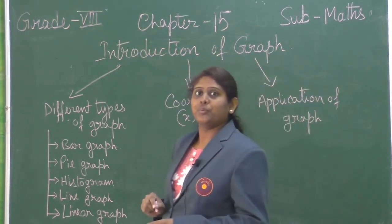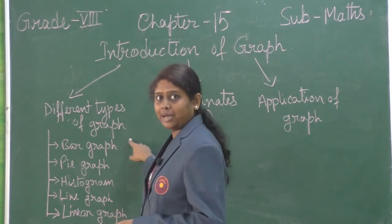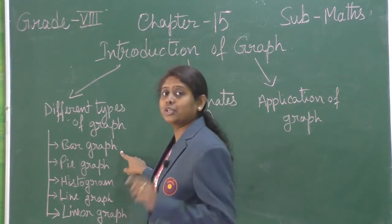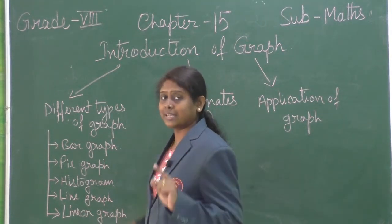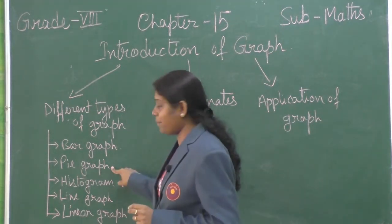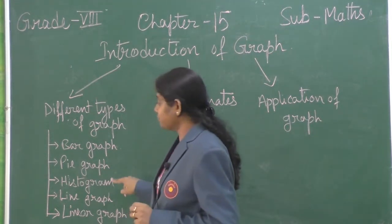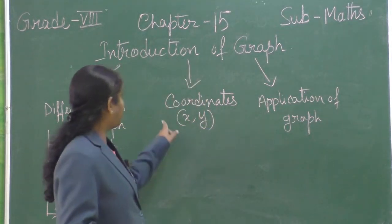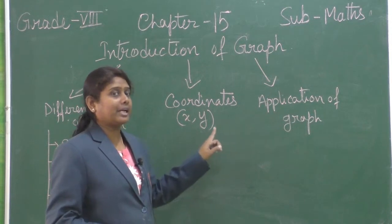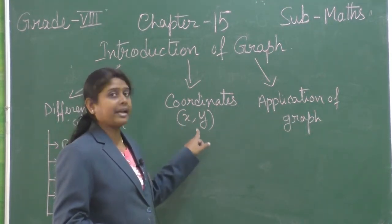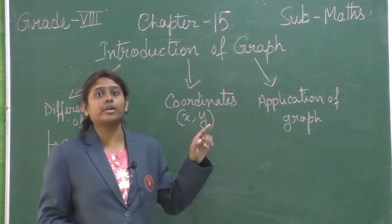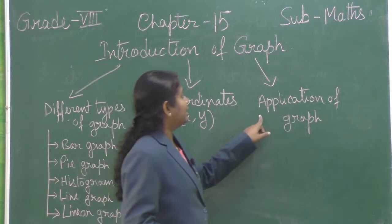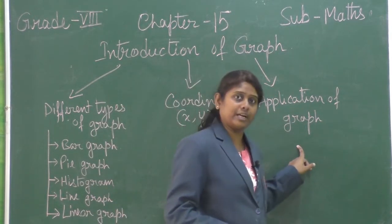In this chapter we have learned different types of graphs. These include bar graph, and as we know there are two types of bar graph: single bar graph and double bar graph. Next, pie graph, histogram, line graph, and linear graph. We have also learned about coordinates, which we can represent in the bracket as (x, y), where x is the coordinate of the x-axis and y is the coordinate of the y-axis. Last, we have learned the application of graph.